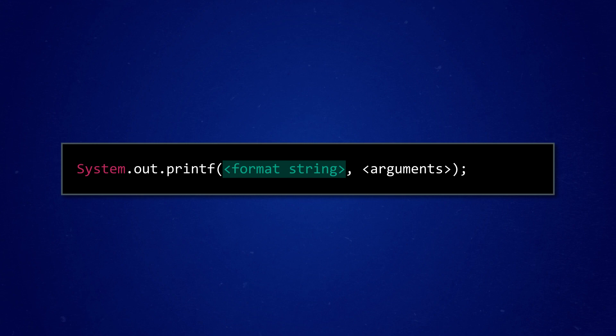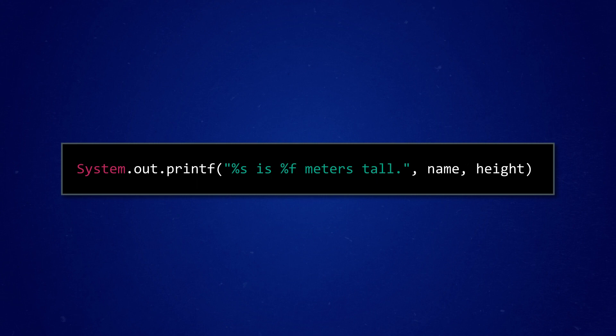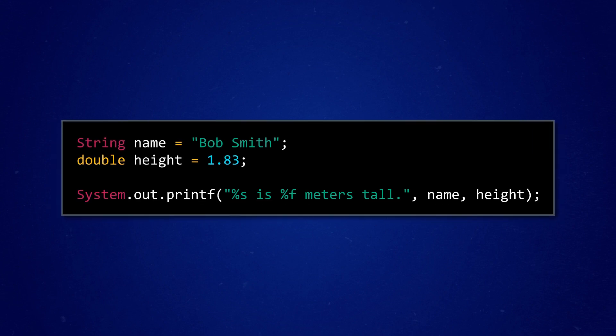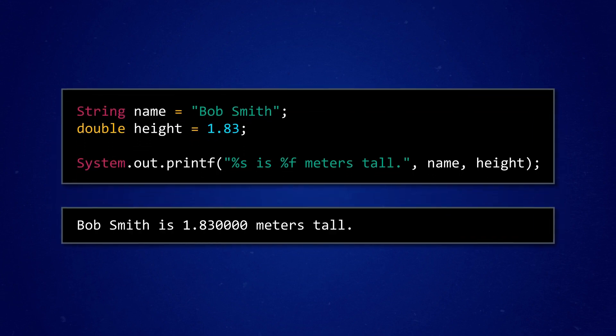First, there's the format string, where we build the print statement like before, only this time we have these little percent symbols in place of the things we want to format. Then the second part is the pieces we want to format, called the arguments. Those are placed at the end of the argument list, separated by commas. They will fill in each placeholder of the format string, in order, when the program runs.